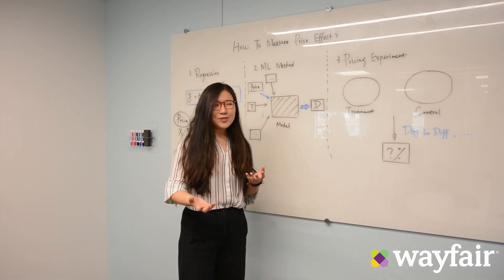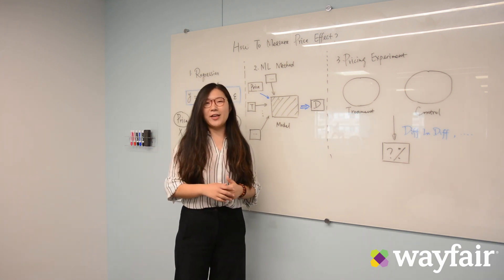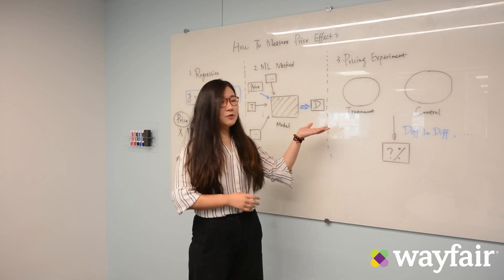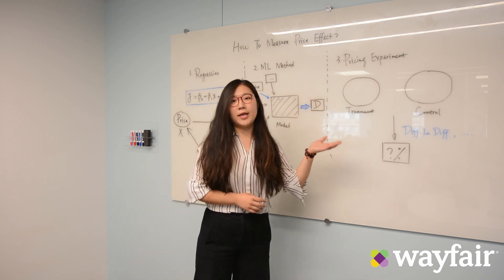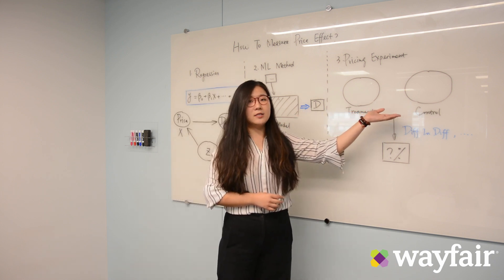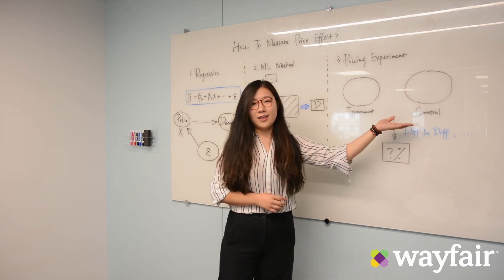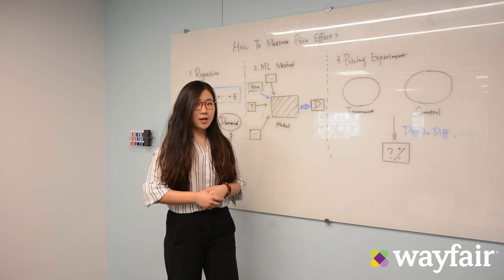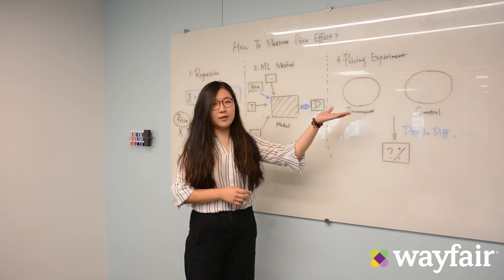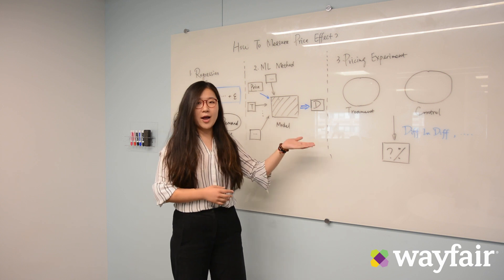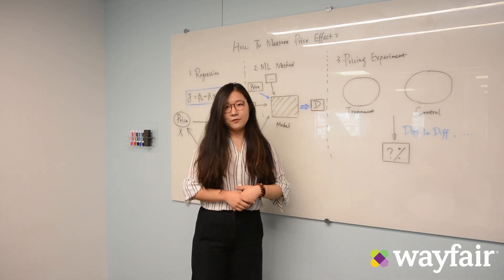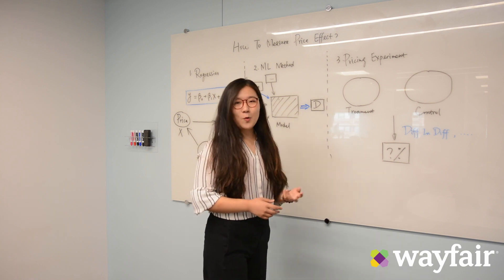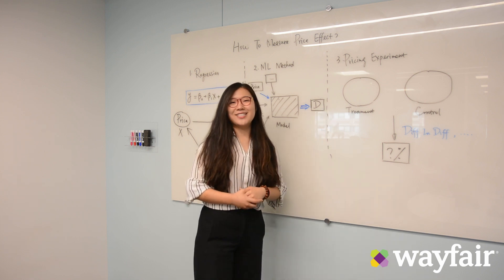But you might say this still sounds a little bit not real — how about a really perfect controlled environment? That brings us to the third way: a price experiment. Ideally, we can have two identical groups: one is called the treatment group where we give a certain pricing treatment, and the other is the control group where we give nothing and leave it as is. We give both groups the same time range so all other factors are controlled, and the only difference between the treatment group and control group is the price treatment. We use a methodology called Diff-in-Diff — basically we want to find what difference the treatment itself brings after a two-, four-, or six-week experiment, and then we know what the price effect itself is.